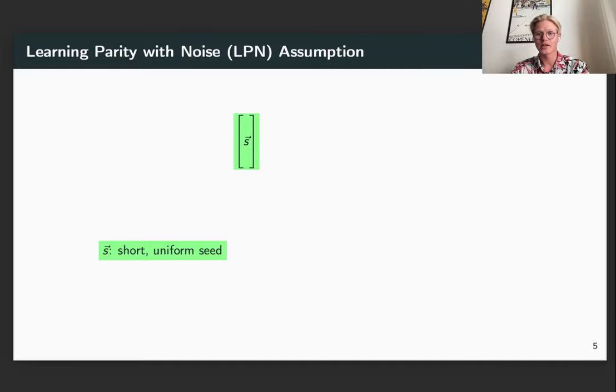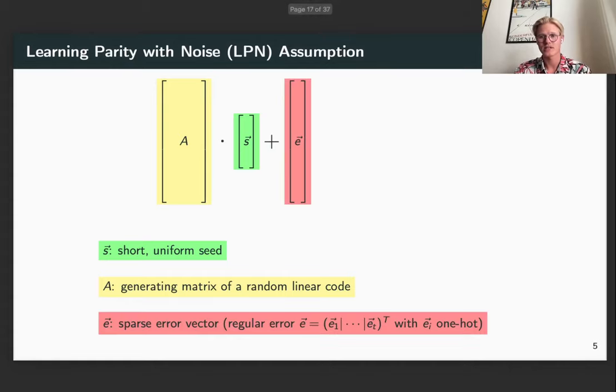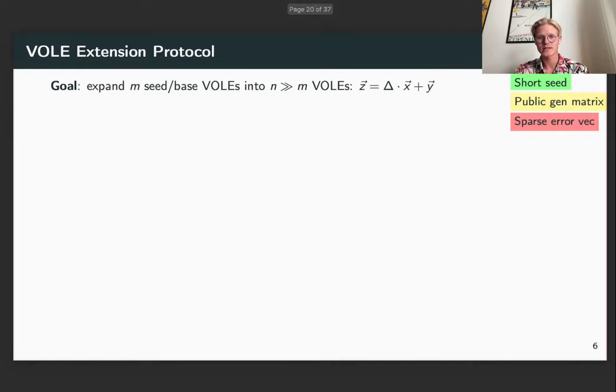So first recap LPN. This is where you have a short seed S, you have a long and big public generating matrix A, and then you have a sparse error vector E. If you do this computation you get out a vector X that looks completely uniform. The way we use this is by starting out with M vector OLEs that we call the seed, and then we expand these into a vector of length N, so that the vector OLE correlation still works for each of the indices in N.